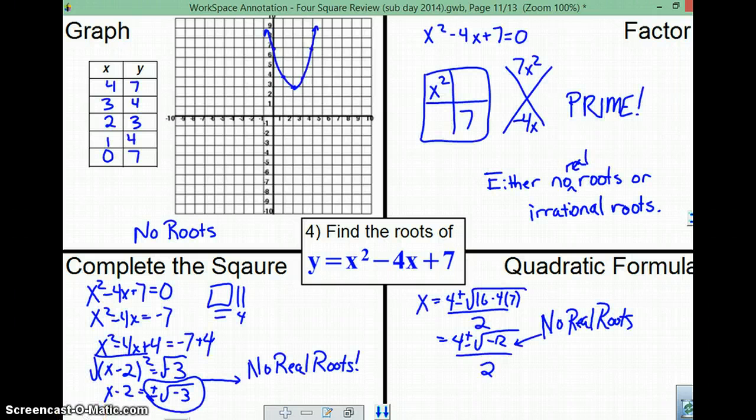All right, here's our answers. You can see that, really, from the graph, there's not going to be any real roots here at all. When we try and factor, it becomes prime. When you factor and it's prime, either that means there's no real roots, or there are roots, but they're irrational.